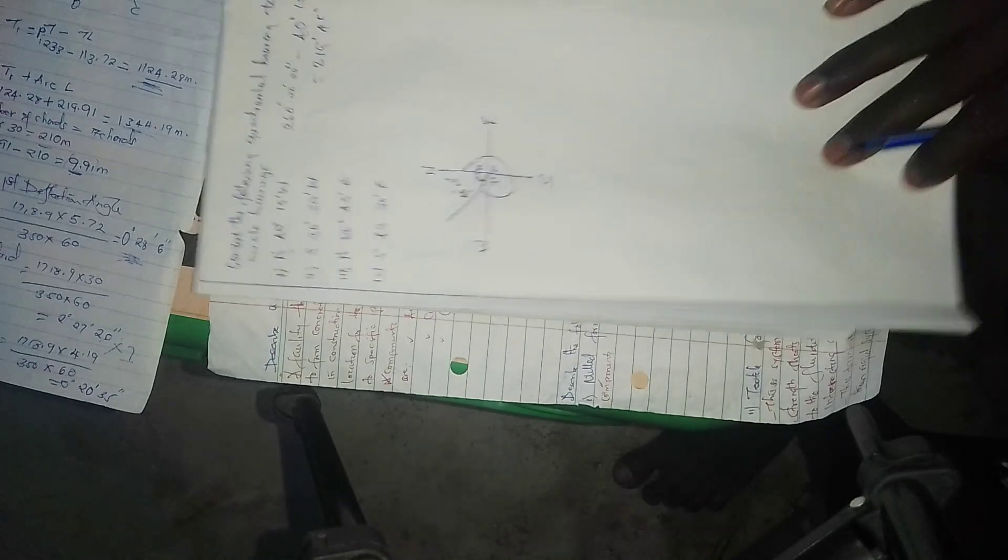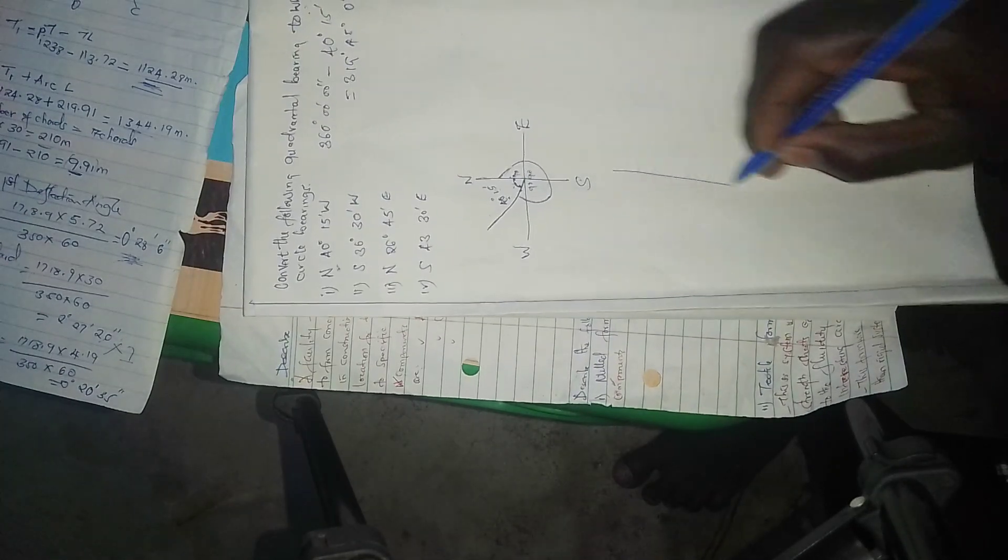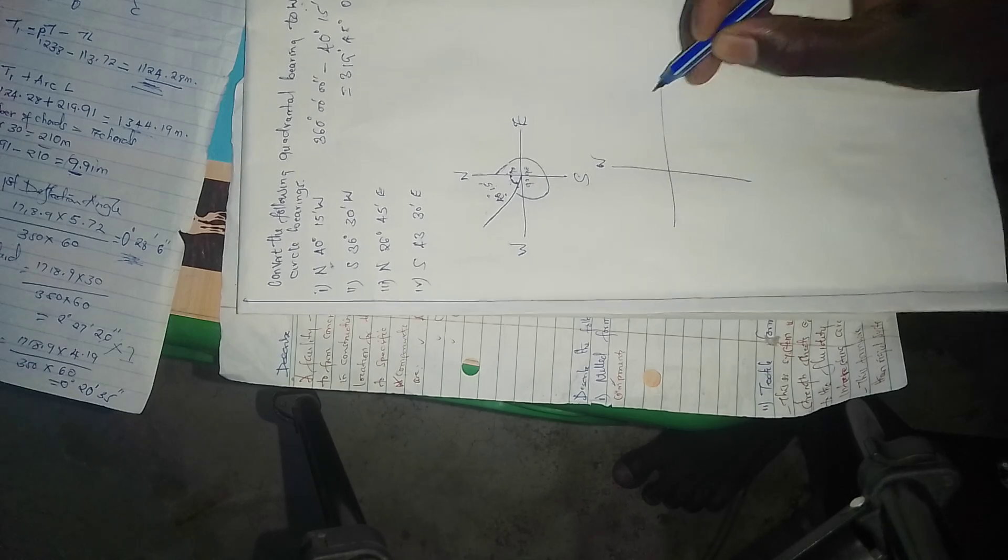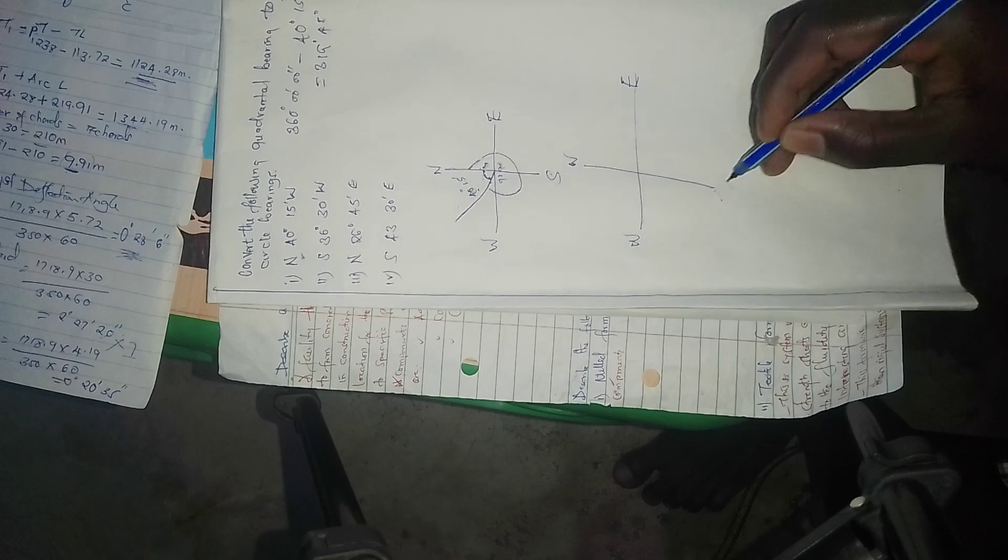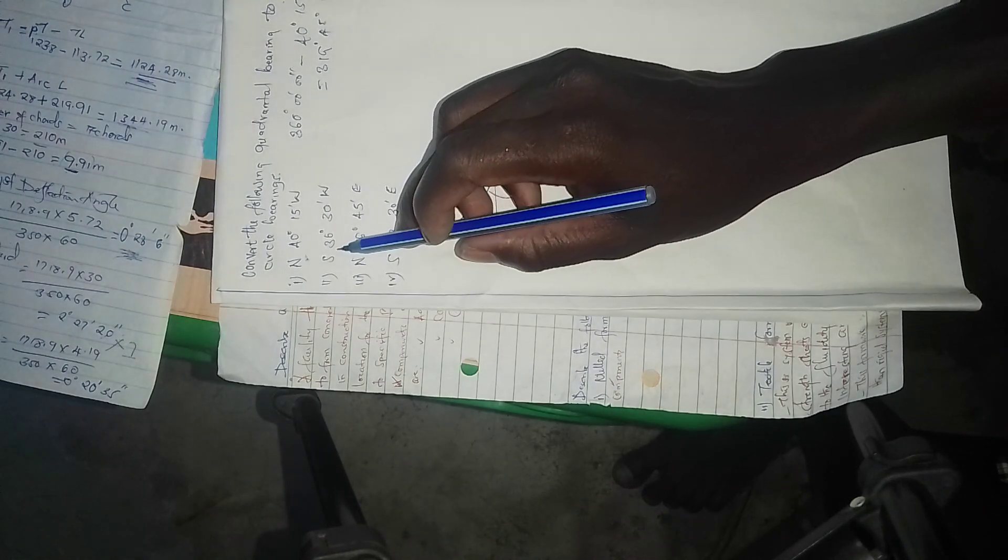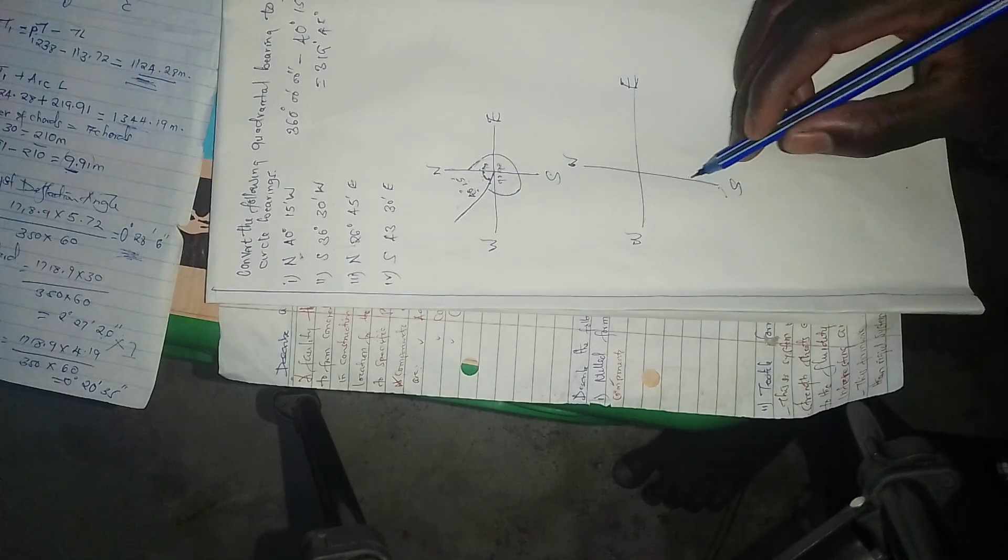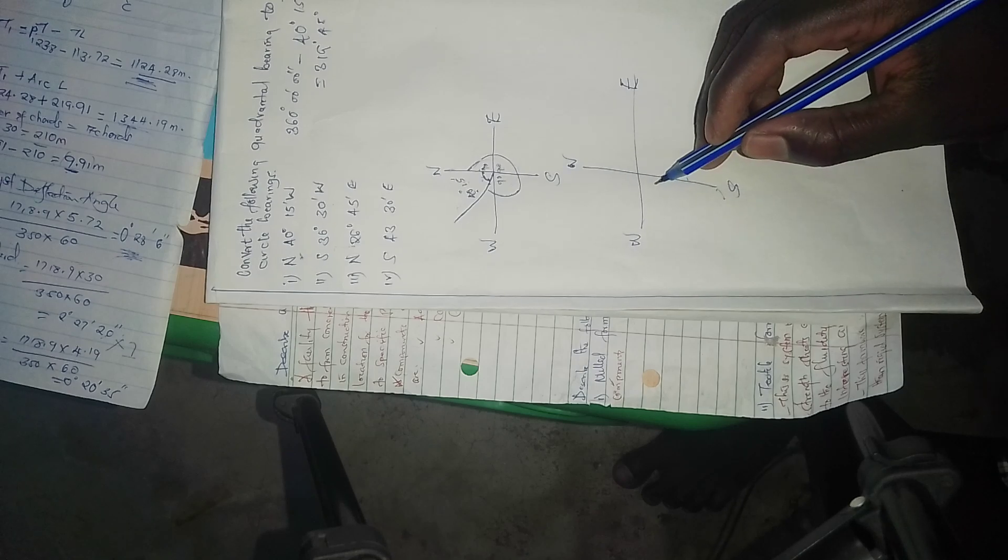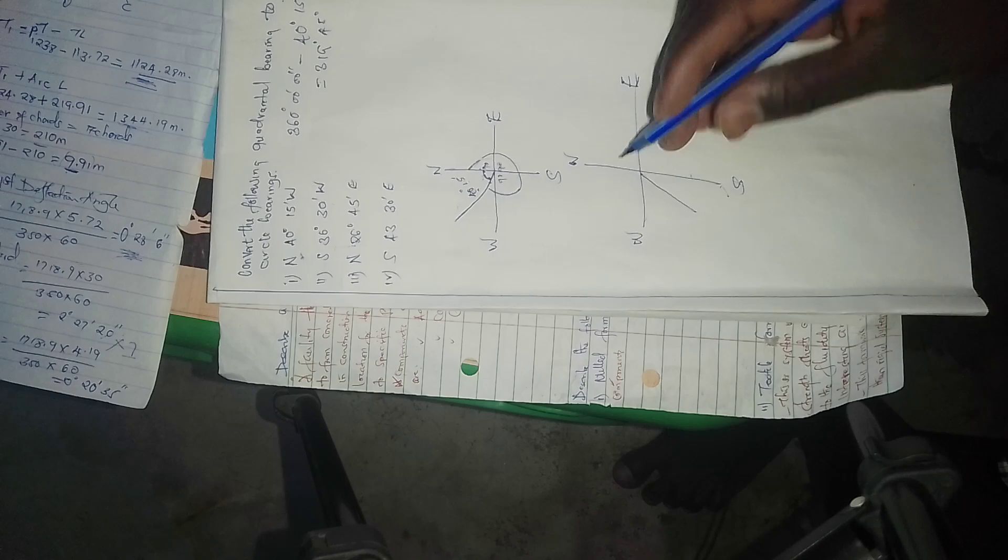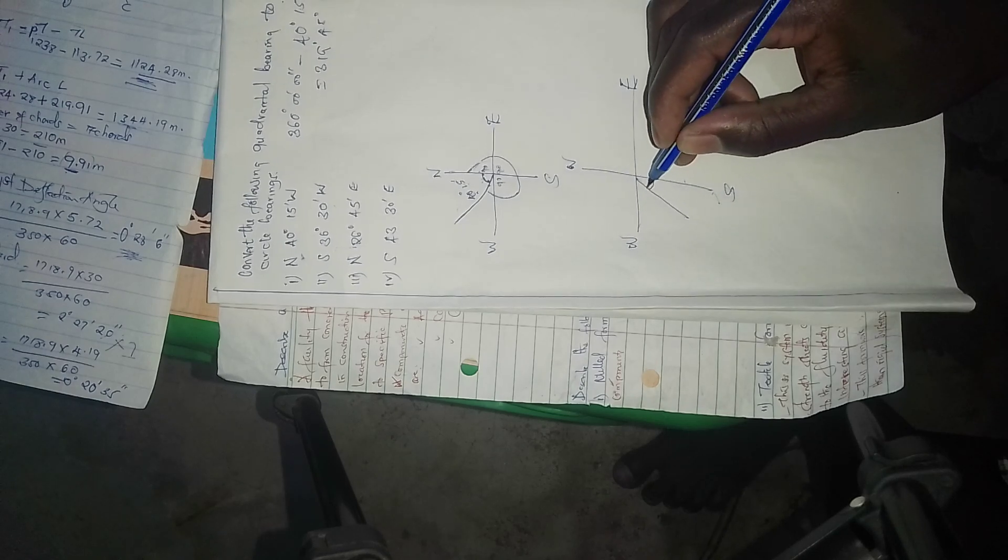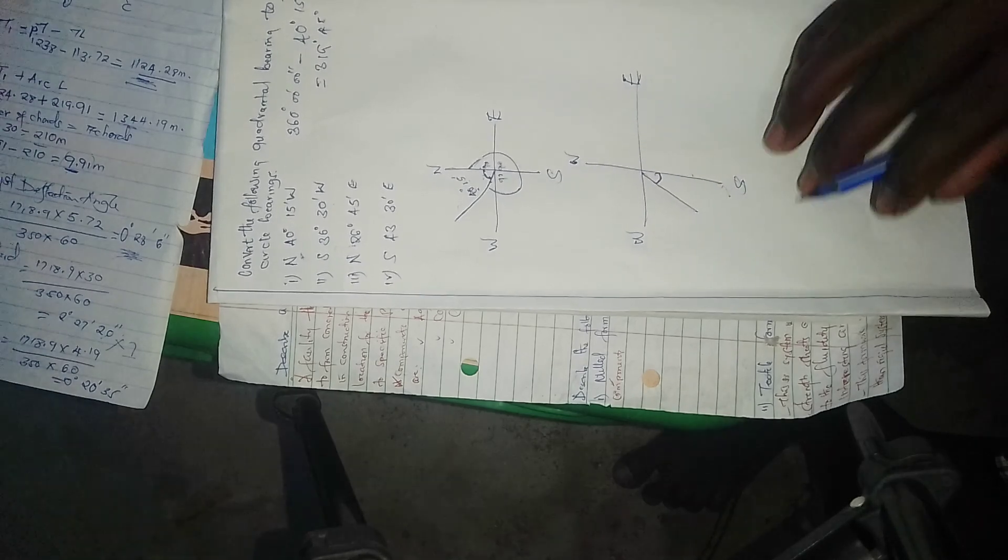The second one, we draw again: north, east, south, west. It says from south to west. From south to west is here.